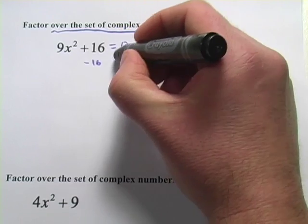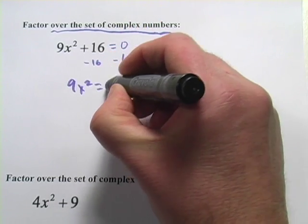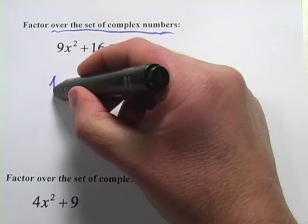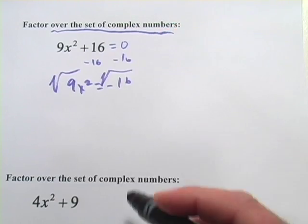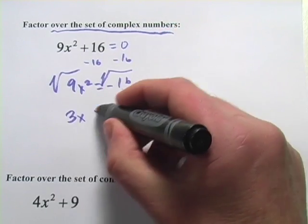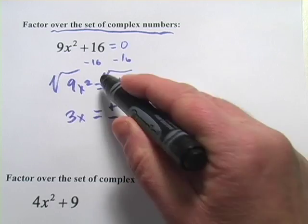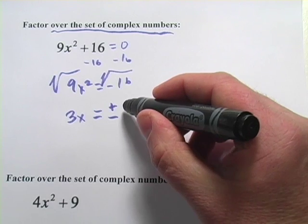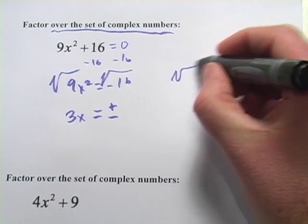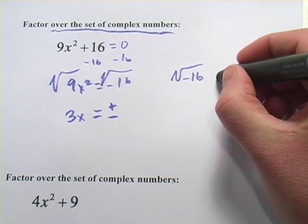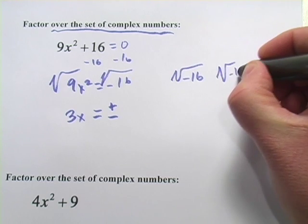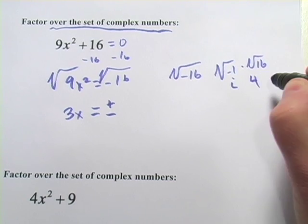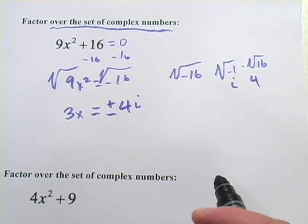I would subtract 16 from both sides. I've got 9x squared equals negative 16, and at this point I think I would take the square root of both sides. Over here I get 3x, and over here I get a positive or negative — remember when we take the square root, we're going to get a positive and negative quantity — of negative 16. The square root of negative 16 is going to be the square root of negative 1 times the square root of 16. This is i, this is 4, so it's positive or negative 4i.